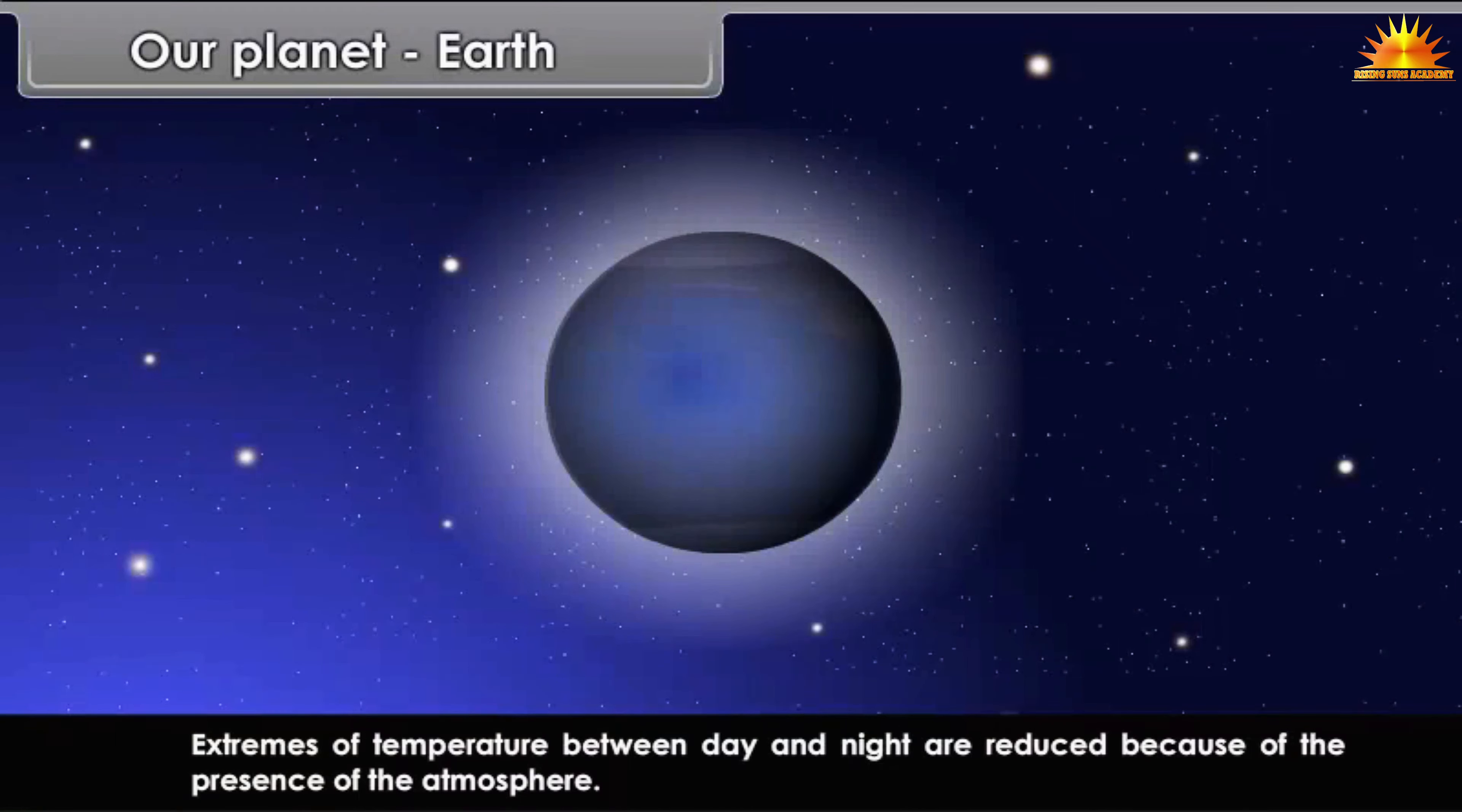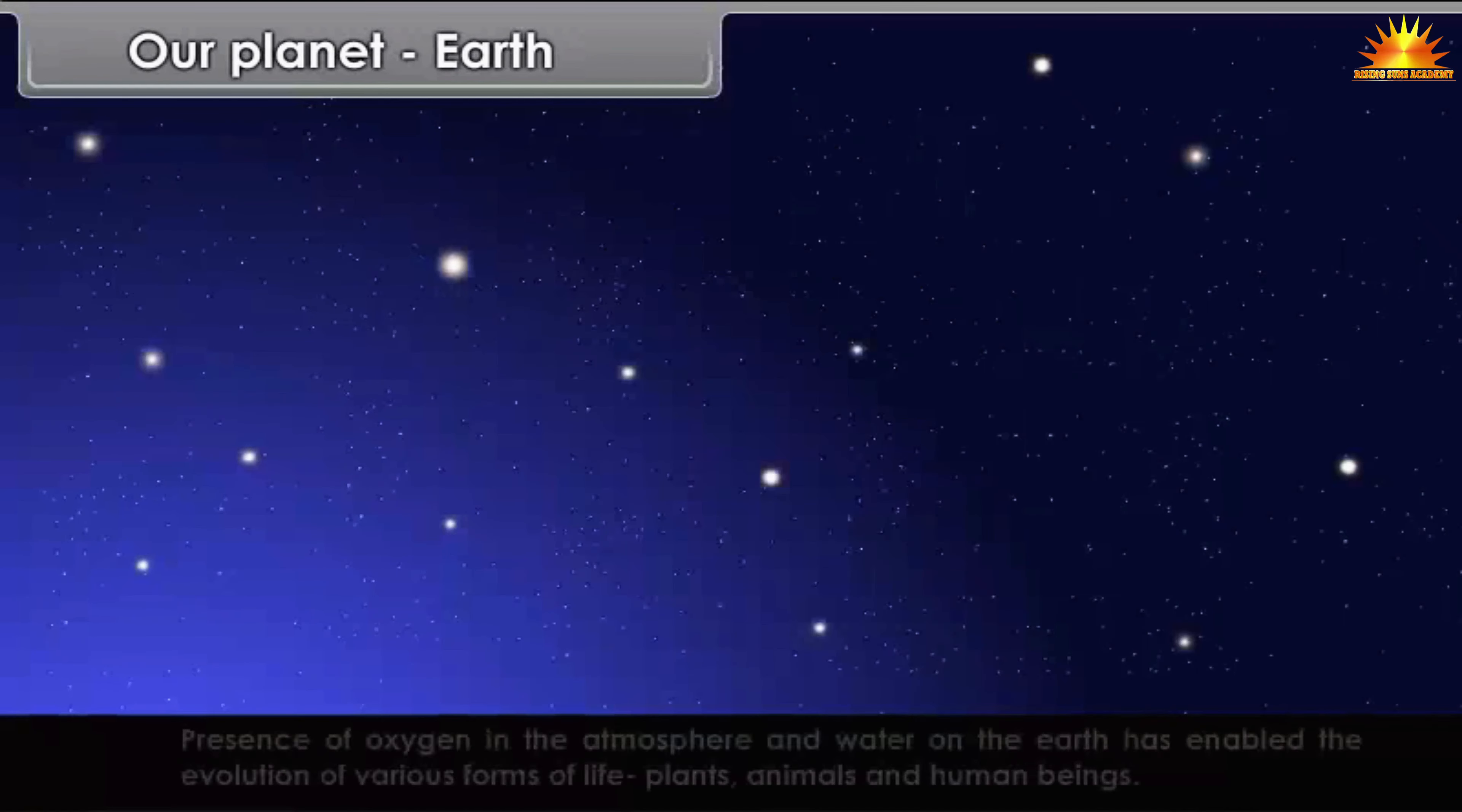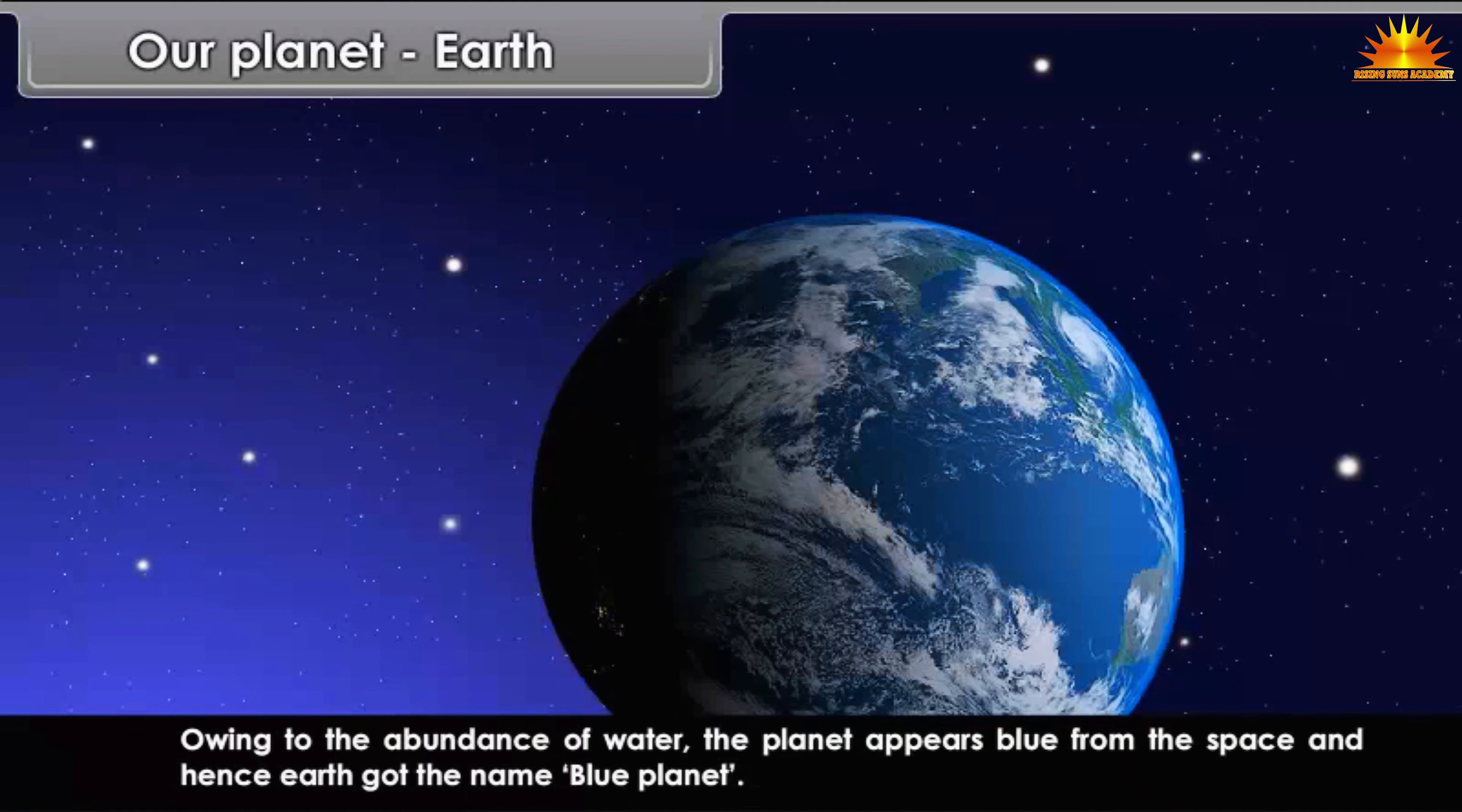There is abundance of water in solid, liquid and vapor state. Presence of oxygen in the atmosphere and water on the Earth has enabled the evolution of various forms of life: plants, animals and human beings. Owing to the abundance of water, the planet appears blue from the space, and hence Earth got the name Blue Planet.